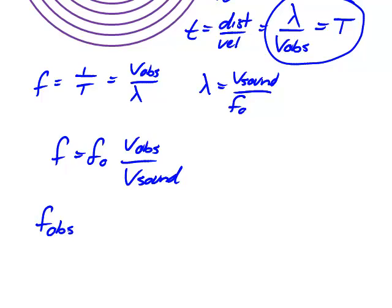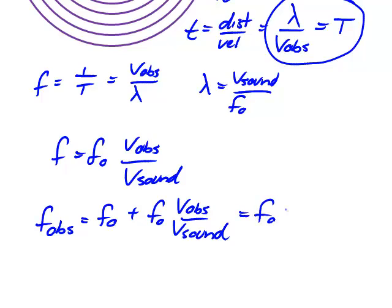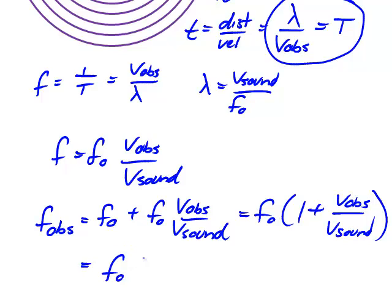Now this is just the additional frequency heard — the extra compressions heard every second because the observer is moving into them. The actual frequency heard will be the source frequency plus this extra. The frequency observed is F-naught plus F-naught times v-obs over v-sound, which can be written as F-naught times (1 plus v-obs over v-sound), and reducing further: the observed frequency is F-naught times (v-sound plus v-obs) divided by v-sound.